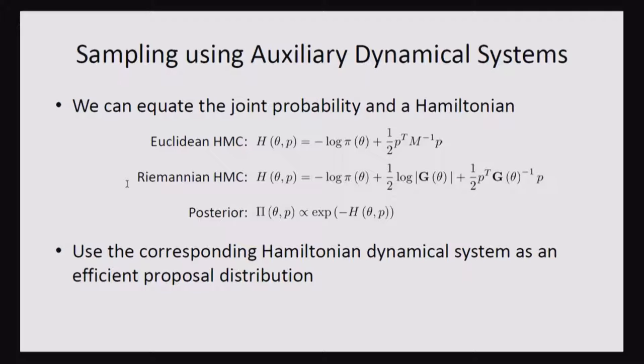So basically, where π is your posterior distribution that you're interested in sampling, you can say that's the potential energy of some dynamical system. And so with that potential energy, you can add a kinetic energy term, which is just Gaussian, so you're adding some additional variables which are the momentum.